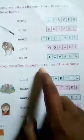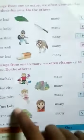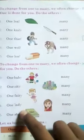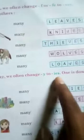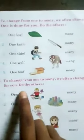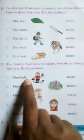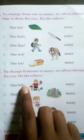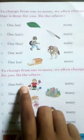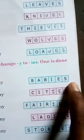Here the words end in Y. You can see all the words have Y as the last letter, so you have to remove Y and add IES to change from one to many. We often change Y to IES. For example, one baby — the last letter is Y, remove Y and add IES, so it becomes babies.